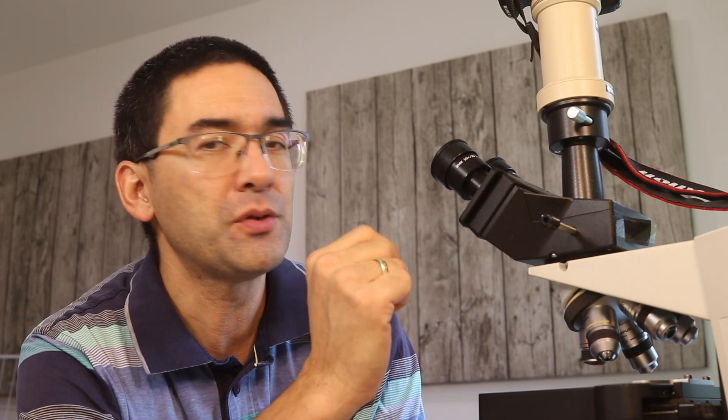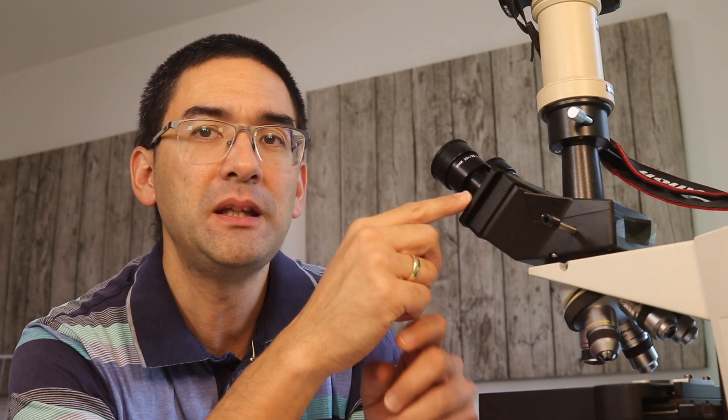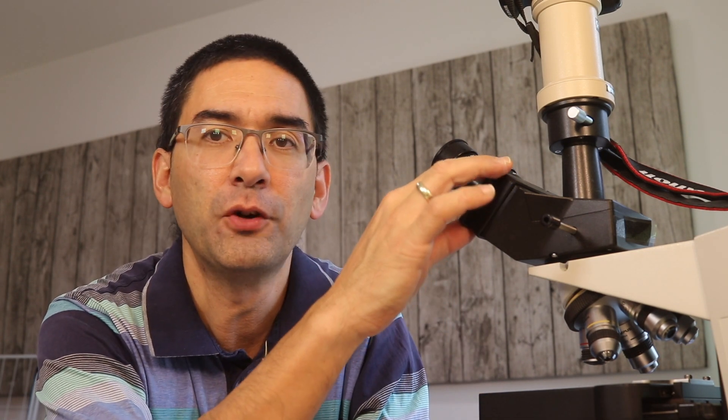These compound microscopes, they have an inverted image. And even though there are prisms also in here, these prisms do not flip the image around, but rather they are there to simply divide the light beam for two eyepieces. So the function is a little bit different.